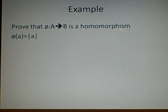Right, we've got two examples. This is the first one. We want to prove that phi from a to b is a homomorphism. Now, phi of a is defined as the modulus of a. So, of course, to prove it, that it's a homomorphism, we just have to do the multiplication of it.